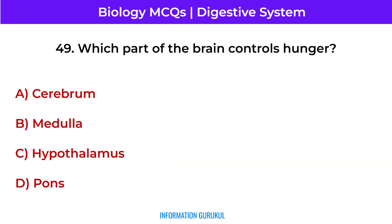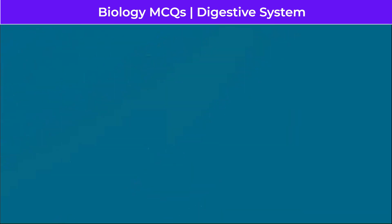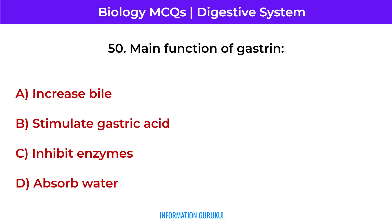Which part of the brain controls hunger? The hypothalamus. The main function of gastrin is to stimulate gastric acid secretion.